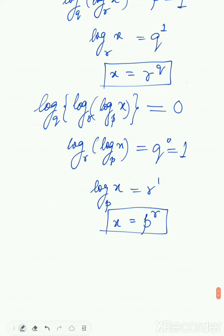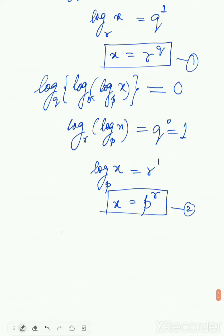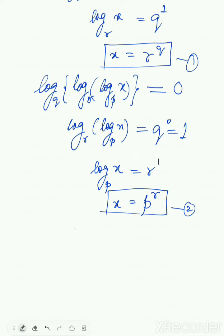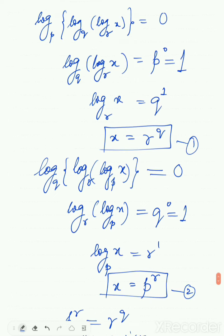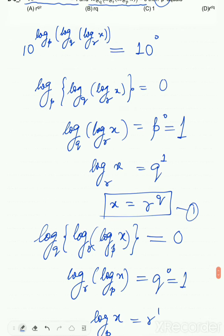Now compare the first and second equations — they are the same, so r to the power of q must equal p to the power of r. So p to the power of r equals r to the power of q. Taking the 1/r-th power of both sides: p equals r to the power of q over r. This is our answer: p = r^(q/r).